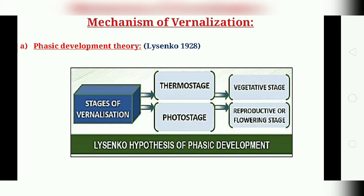According to Lansko, growth and development are the two important phases in the life of each and every plant. Development is not necessarily a consequence of growth, but the length of the vegetative period of growth of a plant is not fixed and can be altered. The development of an annual plant must take place in a series of phases or stages which must proceed in a definite sequence.